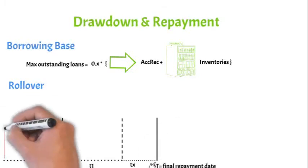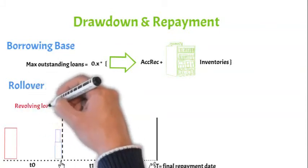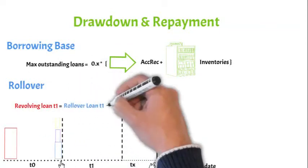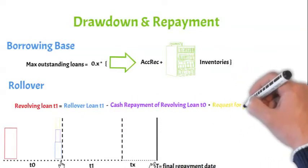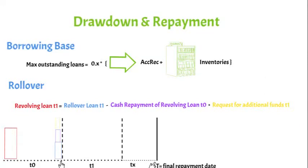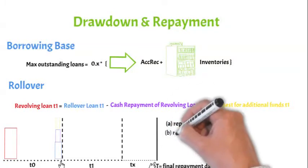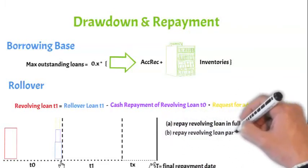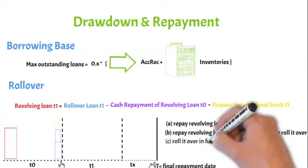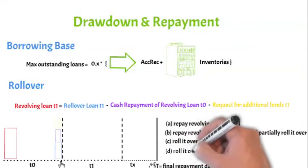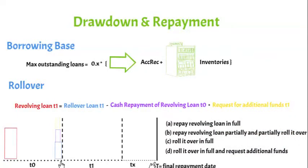At the end of each interest period, it can be partially or in full repaid by requesting another drawdown for the next interest period, thus effectively rolling the revolving loan to another interest period. So at the end of each interest period, the borrower has following options: whether it will repay the outstanding revolving loan in full, whether it will repay it in cash only partially and partially roll it over to the next interest period, whether it will roll it over to the next interest period in full, or even whether it will fully roll it over into the next interest period and on top of that request additional cash to be advanced to it by the lender.